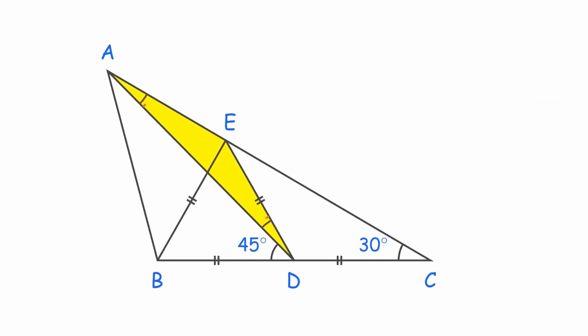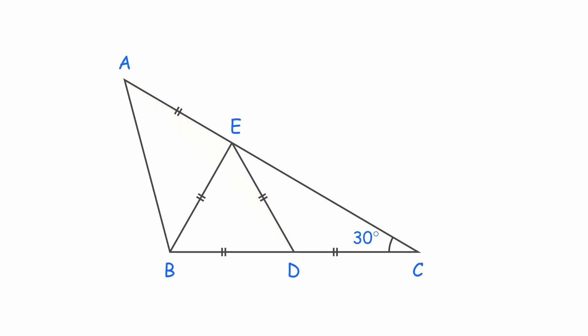That means triangle AED is isosceles, and side AE also joins the group of equal sides. Now, look at triangle EAB. This is yet another isosceles triangle, and here's the key.